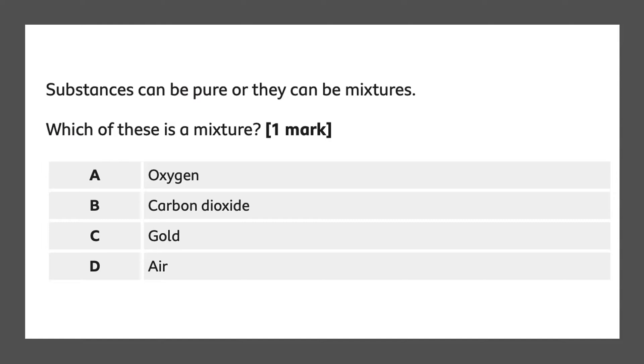Gold is an element in the periodic table and air is a mixture of gases. So we know that this is going to be air. Circling air would give you one mark. Next question.